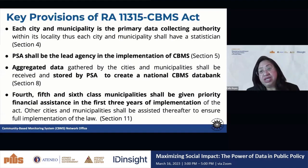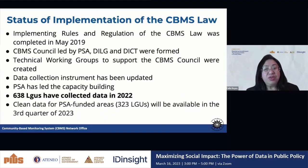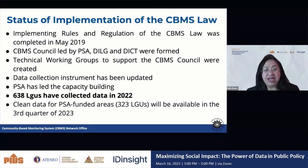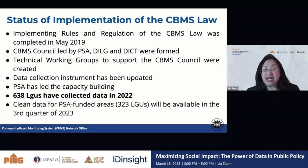The other cities and municipalities will be assisted thereafter to ensure full implementation of the law. Since enactment, where are we right now? The implementing rules and regulations were completed in 2019. The CBMS Council led by PSA, DILG, and DICT has been formed. Technical working groups to support the CBMS Council were also created. The data collection instrument has been updated. PSA has provided capacity building and 638 LGUs have collected data. Clean data for PSA-funded areas — numbering about 323 LGUs — will be available in the third quarter of 2023.